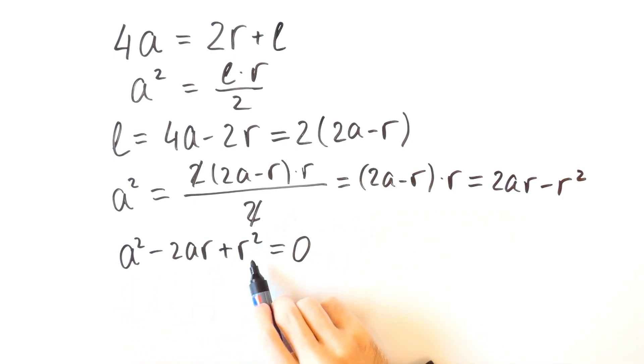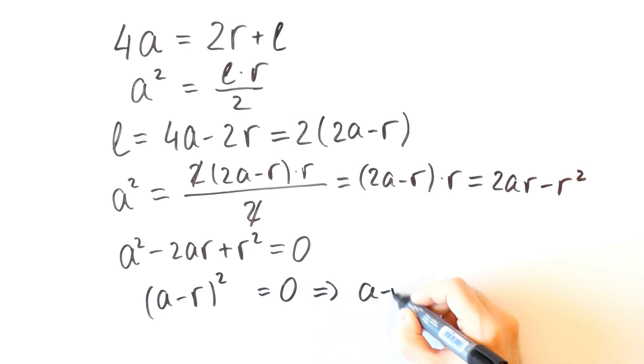Now this is the square of a binomial which is in this case A minus R squared and that is equal to 0. But that can only be if A minus R is equal to 0, which means that R is equal to A.